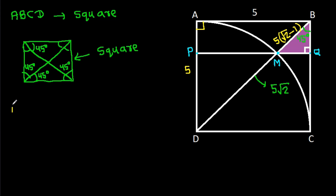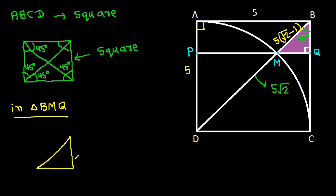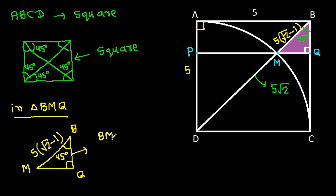Now, in triangle BMQ, BM is 5 times (√2 minus 1), the angle at Q is 90 degrees, and the angle at B is 45 degrees. So BQ equals BM times cos 45°, and MQ equals BM times sin 45°.